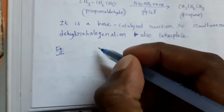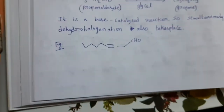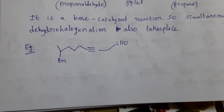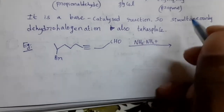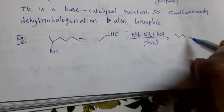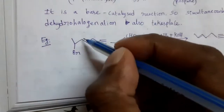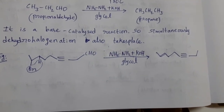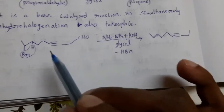If a compound contains a halogen atom — for example, bromine — and a triple bond and CHO group, this compound undergoes Wolf-Kishner reduction with NH2NH2 in the presence of KOH and glycol as solvent. From this, the hydrogen and halogen atoms are removed in the form of HCl — dehydrohalogenation takes place and a double bond is formed. However, the triple bond remains intact; there is no change in the triple bond.